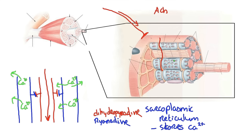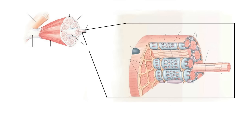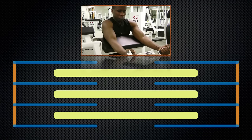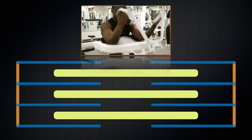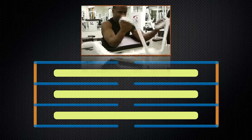The take-home message is: the signal comes via the axon, causes a signal in the sarcolemma, that signal travels deep into the muscle cell via the T-tubules. Because of the relationship between the dihydropyridine receptor and the ryanodine receptor, that causes calcium stored in the sarcoplasmic reticulum to be released, and the calcium release causes muscle contraction. You can see here where calcium is being released, and then the calcium is pumped back out.